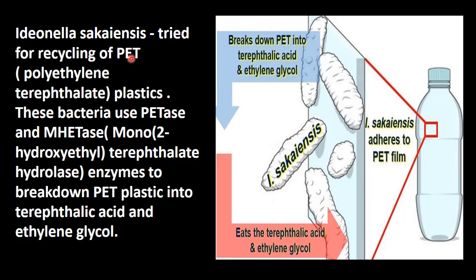This is tried for recycling of PET. PET bottle is used as a water bottle. PET bottle is made up of polyethylene terephthalate. It is a plastic. This bacteria uses the PET — it is an enzyme, polyethylene terephthalate hydrolyze (PET enzyme), and also another enzyme, mono(2-hydroxyethyl) terephthalate hydrolase.